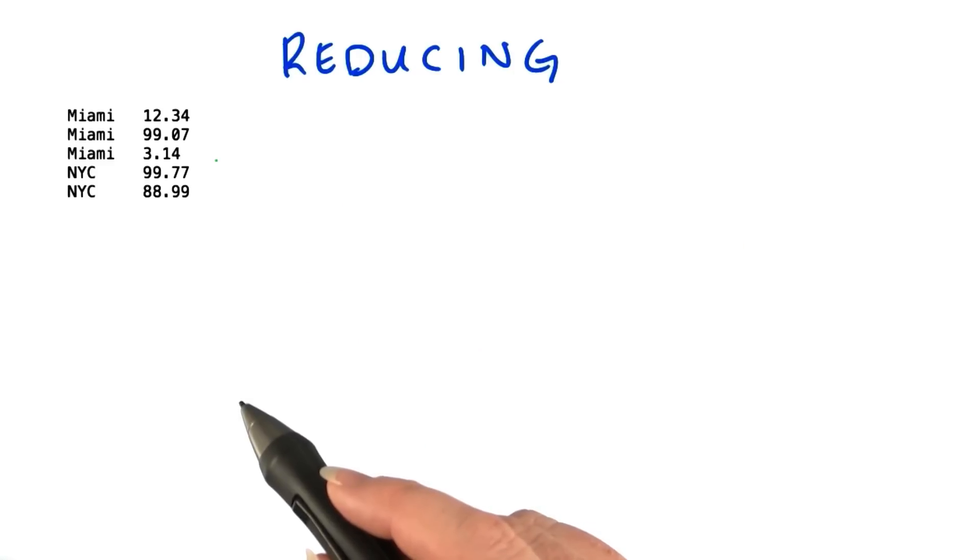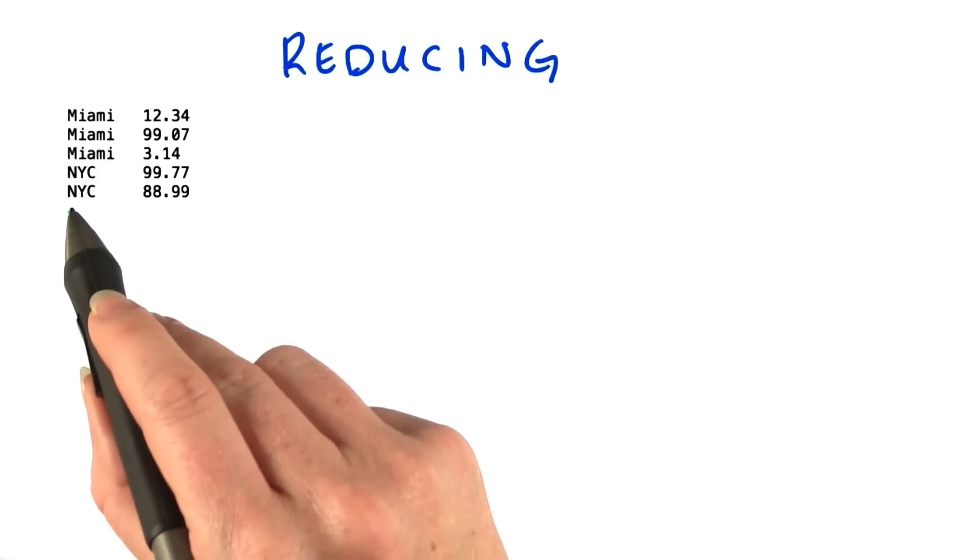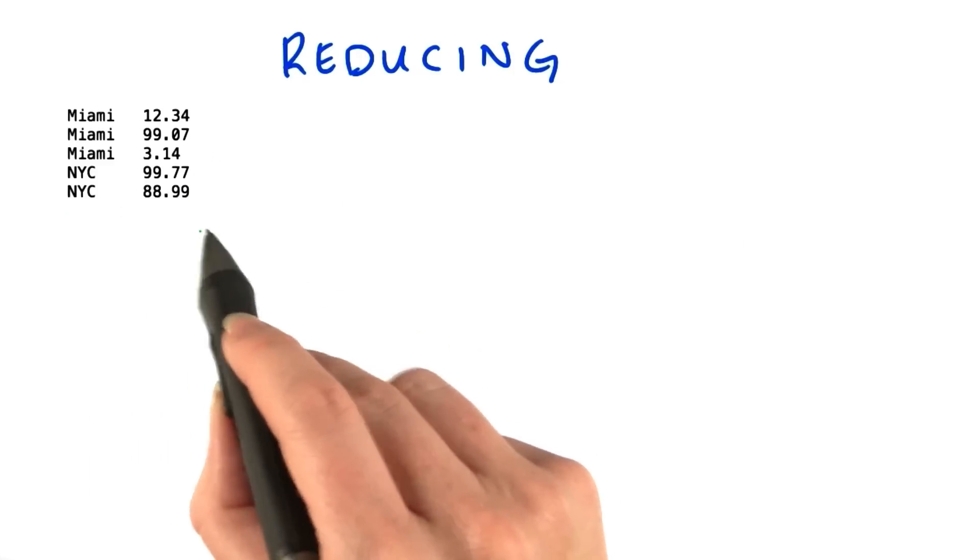If we had specified more than one reducer, each would receive some of the keys along with the values for those particular keys.